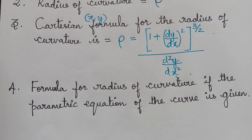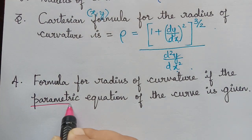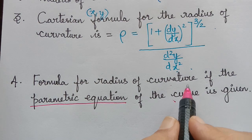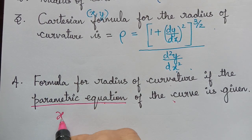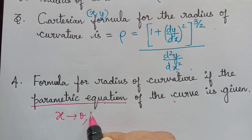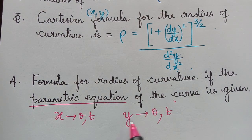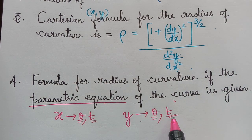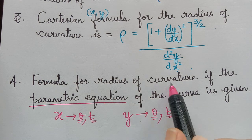The next formula is for the radius of curvature when the parametric equation of the curve is given. In a parametric equation, x and y are each expressed in terms of a common parameter, such as t or theta. Whenever the equation is given in parametric form, there are two ways to find the radius of curvature.